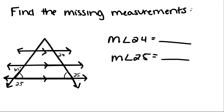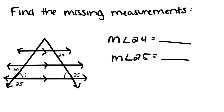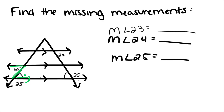We have one more example. Find the missing measurements. The first thing we're going to do is find out what this angle equals, because then I can use my knowledge of supplementary angles to find out what the measure of angle 23 is. I can find this out because I know that these two lines are parallel, cut by this transversal, so their alternate interior angles are congruent. That means this angle has to be 65 degrees as well.